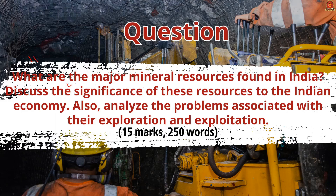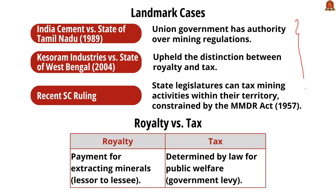The first important case is India Cement versus State of Tamil Nadu, 1989. In this judgment, states only have the power to collect royalties and not impose taxes on mining activities. The Union Government has overriding authority over the regulation of mines and mineral development under the Mines and Minerals (Development and Regulation) Act, 1957.